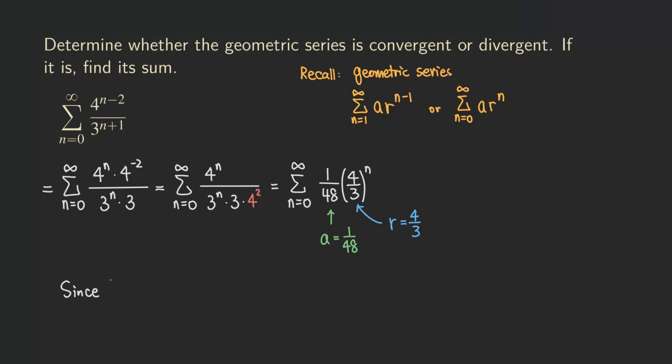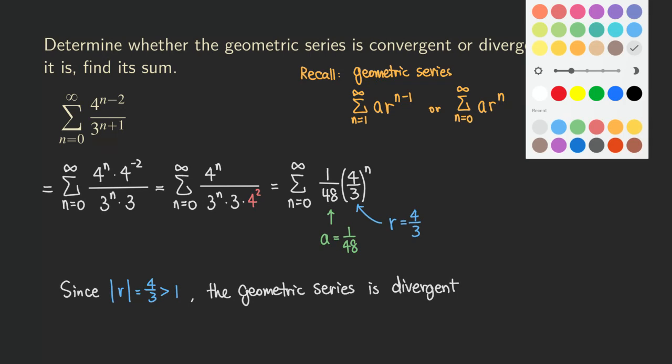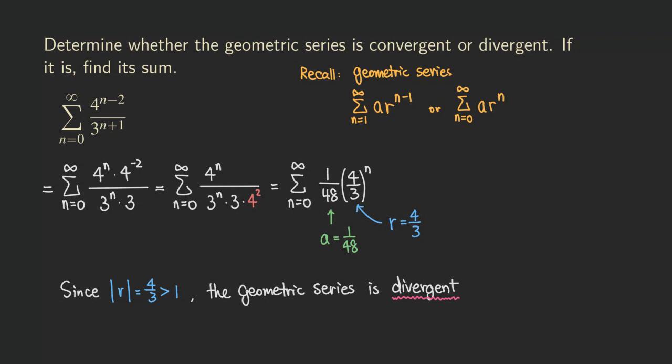So now we'll say that since the common ratio, absolute value r, is equal to four over three, which is greater than one, the geometric series is divergent. Well, you can say that it diverges. Then you can say that by the geometric series test. And then we cannot find the sum.